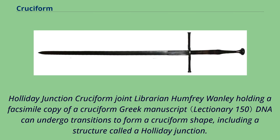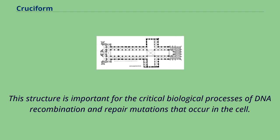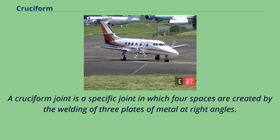DNA can undergo transitions to form a cruciform shape, including a structure called a holiday junction. This structure is important for the critical biological processes of DNA recombination and repair mutations that occur in the cell. A cruciform joint is a specific joint in which four spaces are created by the welding of three plates of metal at right angles.